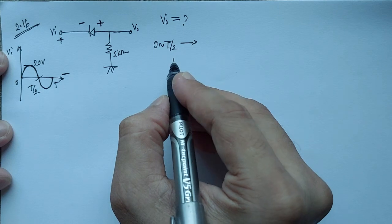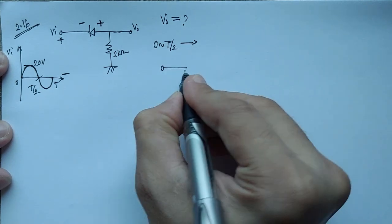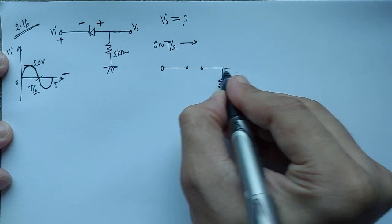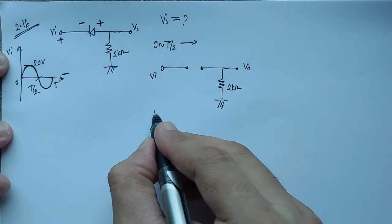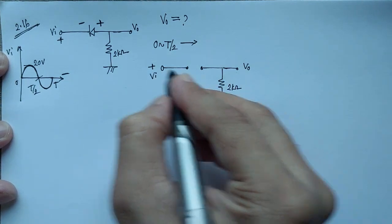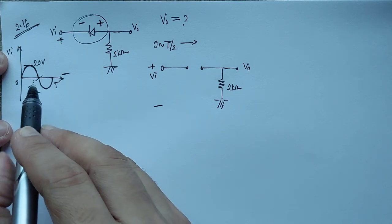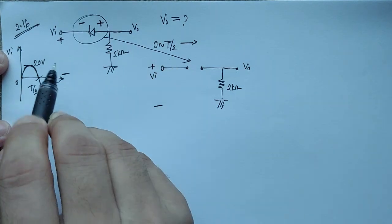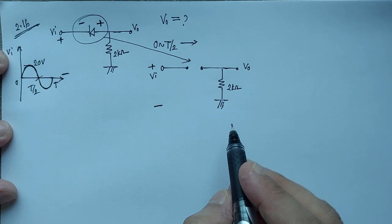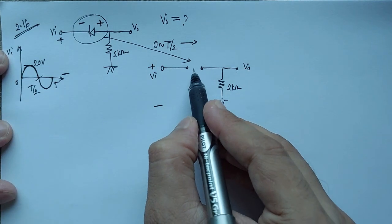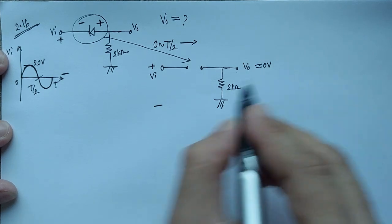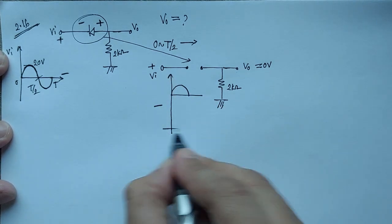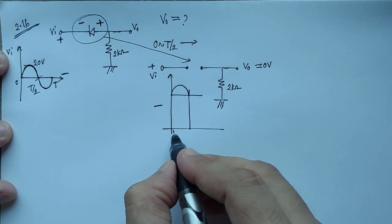The diode will be replaced by an open circuit. The polarity is minus and plus. The diode will not operate when the input voltage is positive, so it will be replaced by an open circuit. For this open circuit, the input signal will appear across the diode and the output voltage will be 0 volt. If we draw the wave shape, for this first half portion the output will be 0 volt.